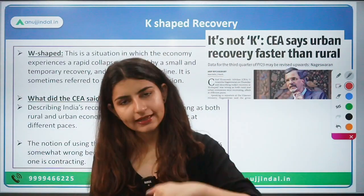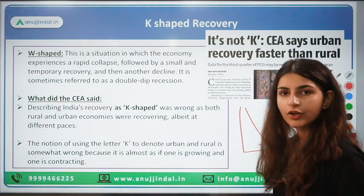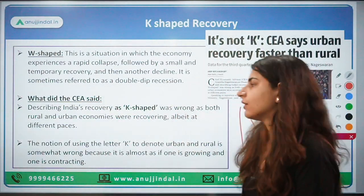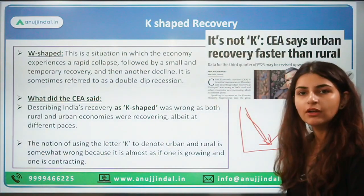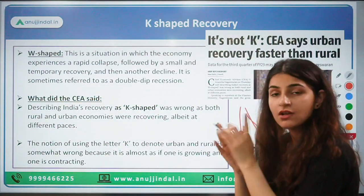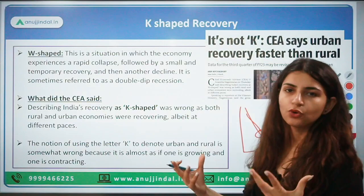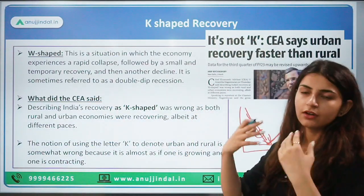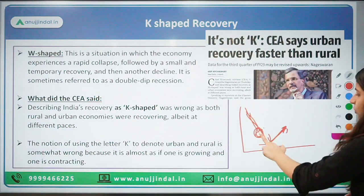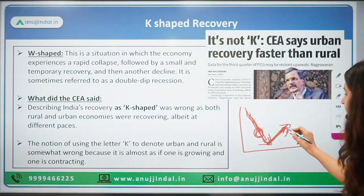The next one is the W-shaped curve, which is very common. There is a dip in the economy, then a small or temporary rise — because of measures taken by the government, or because of a favorable base effect, there is a short-term recovery that may seem like high growth. However, this recovery is temporary and will not last, and the economy will see another fall.